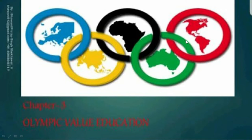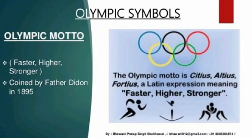Good afternoon students. Today we are going to study part two of chapter second, that is Olympic Value Education. In the first part we studied about what is Olympics, the types of Olympics — Paralympics and Special Olympics. Now we are going to study Olympic symbols, ideals, objectives and value of Olympism, the International Olympic Committee, and the Indian Olympic Association.